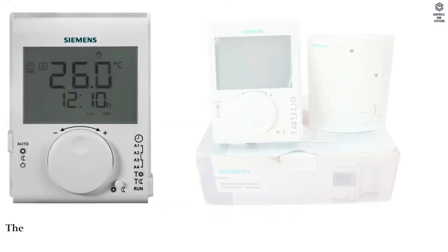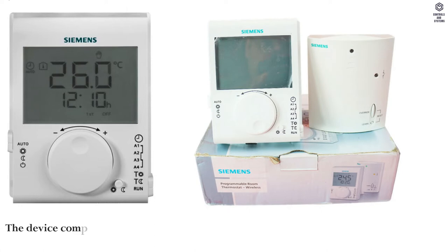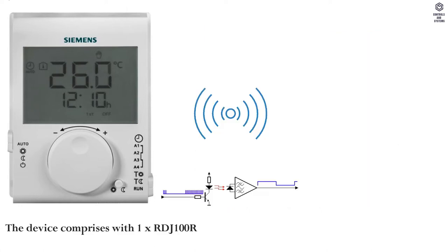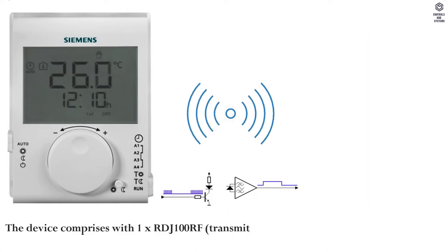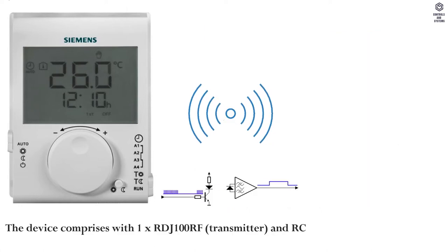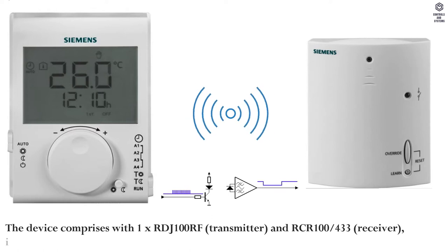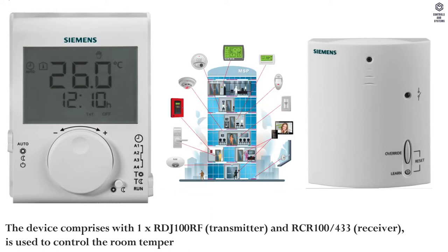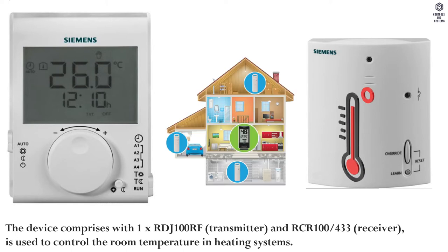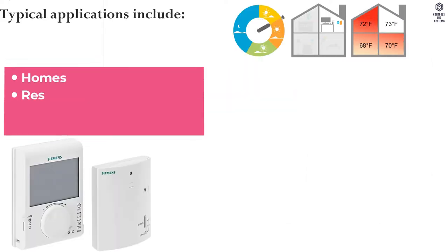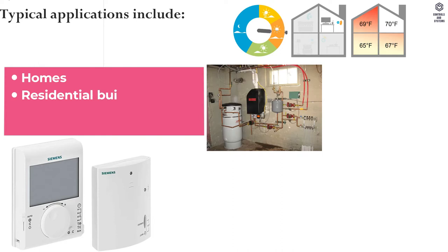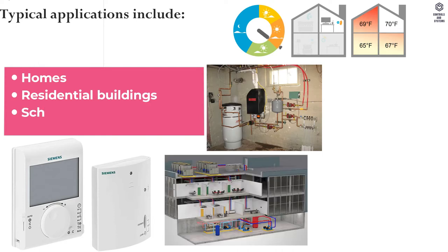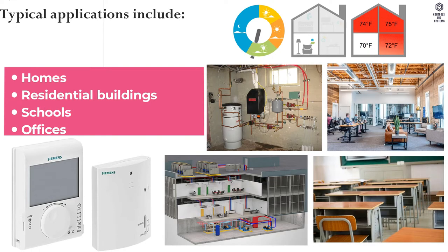Device overview. The device comprises one RDJ100RF transmitter and RCR100433 receiver, and is used to control room temperature in heating systems. Typical applications include homes, residential buildings, schools, and offices.